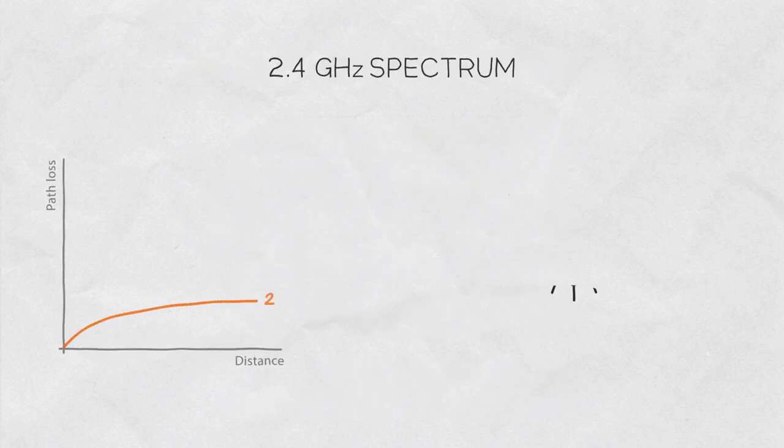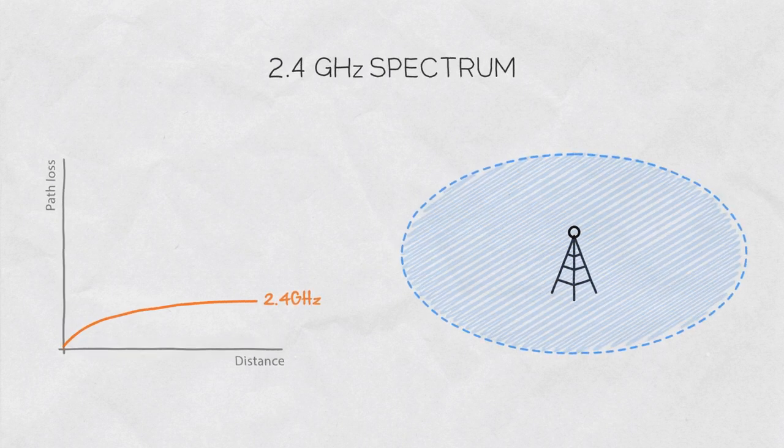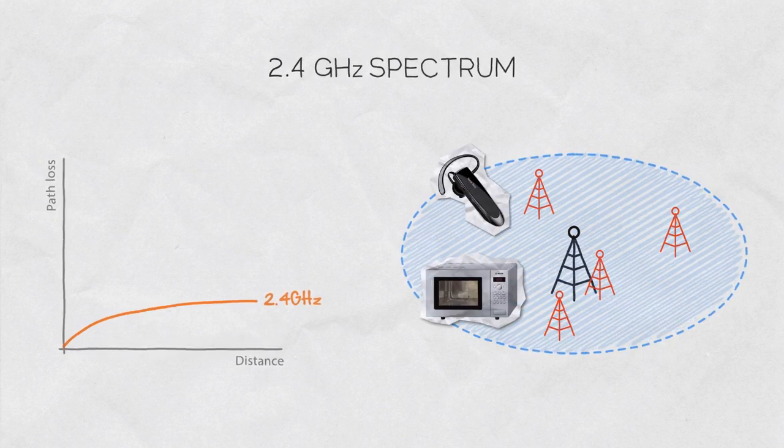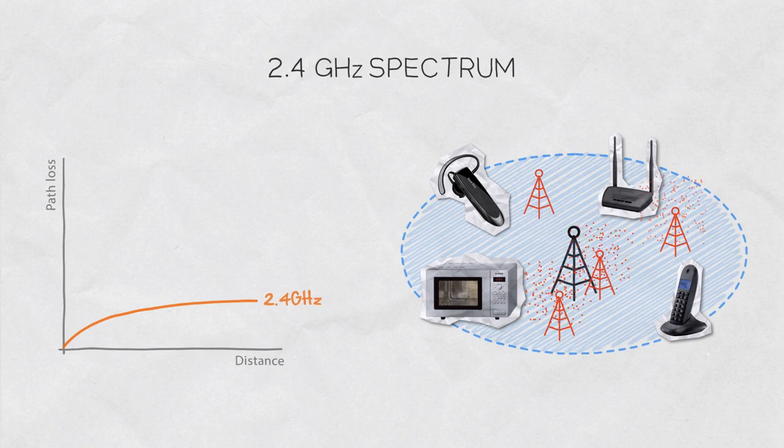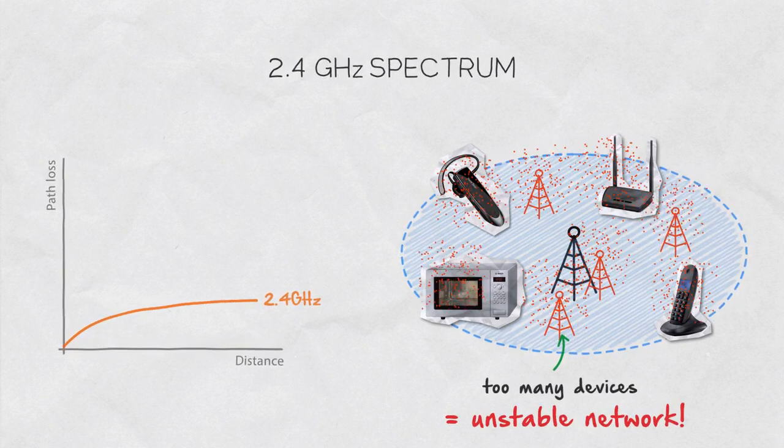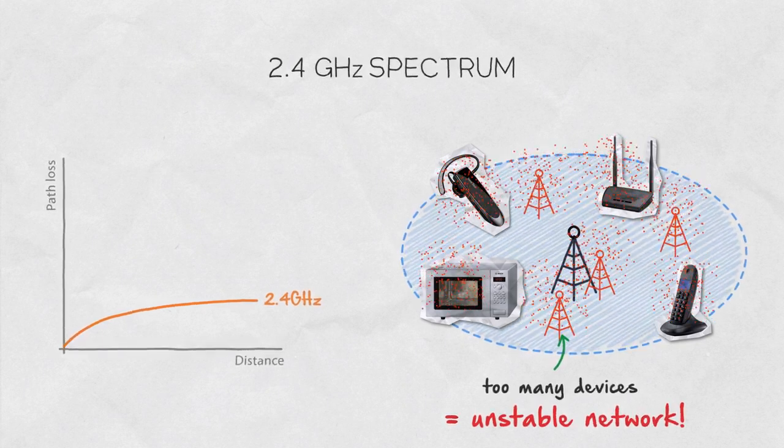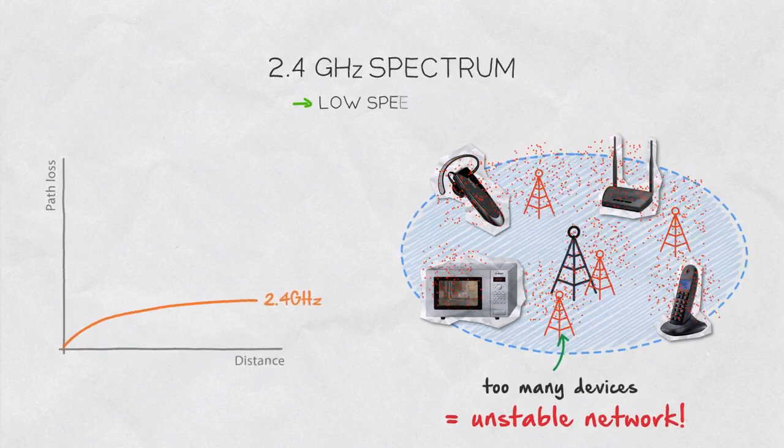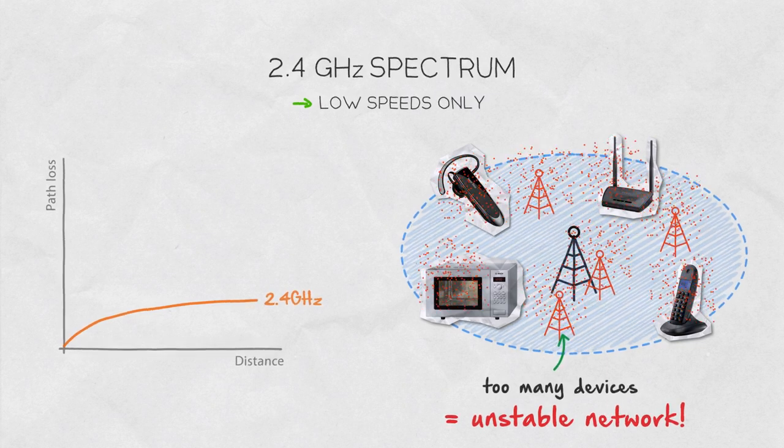At 2.4 GHz, the waves travel far, but the huge amount of other devices operating in the same bandwidth generates enough interference to clutter the spectrum, making the network highly unstable and unreliable. At the same time, the throughput speeds achievable in the limited bandwidth are increasingly insufficient for today's growing demand.